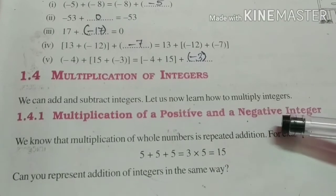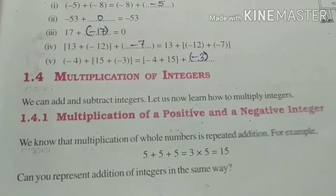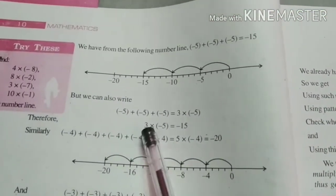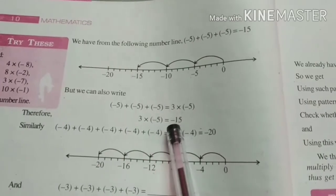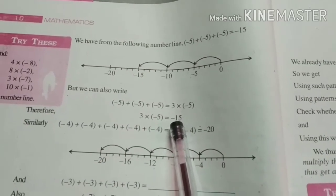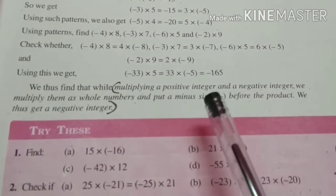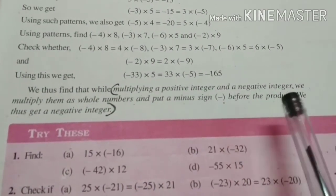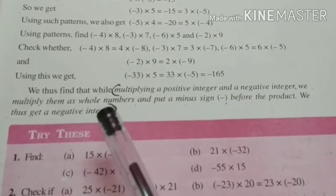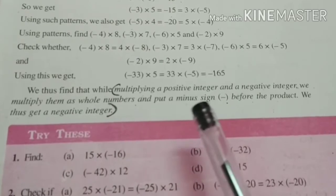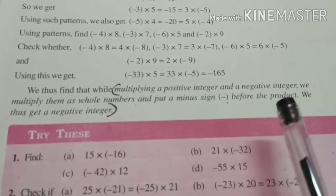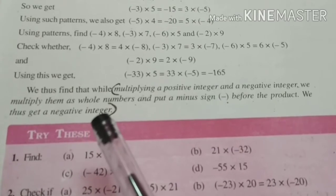Now let's move on to multiplication of integers. Multiplication of a positive and a negative integer. Let us take one example. Here you can see 3 into minus 5 is equal to minus 15. Multiplying a positive integer and a negative integer, we multiply them as whole numbers and put a minus sign before the product. We thus get a negative integer.